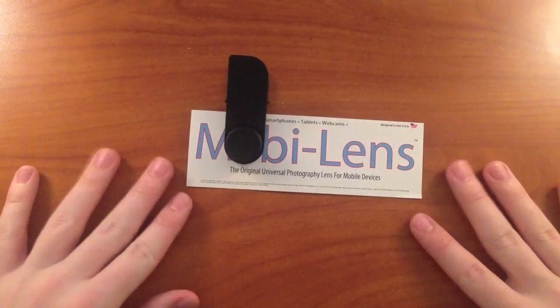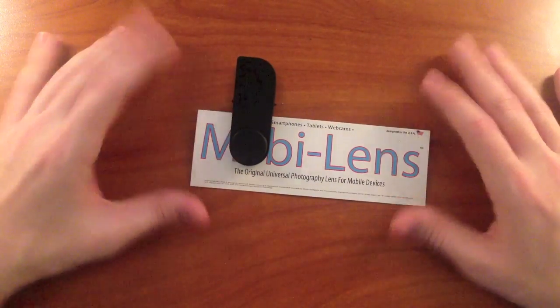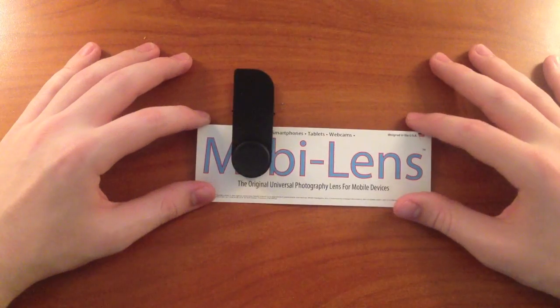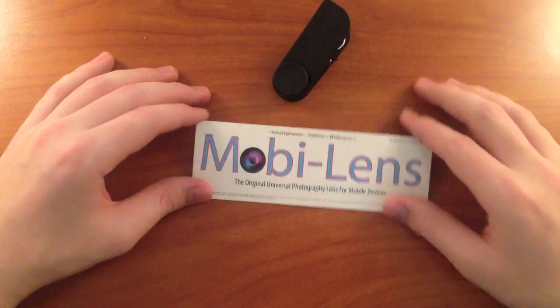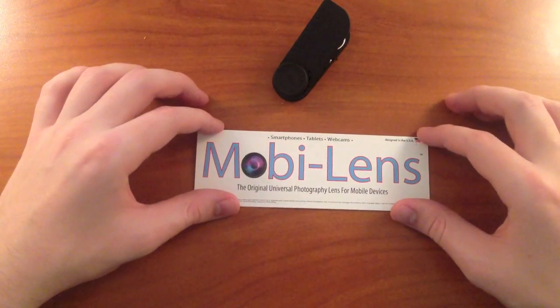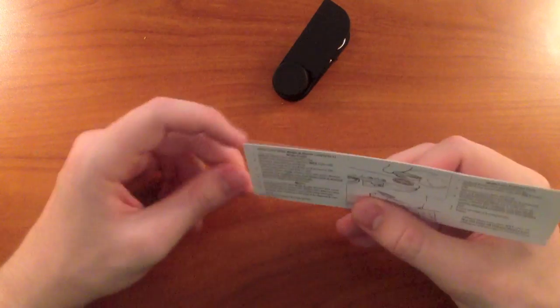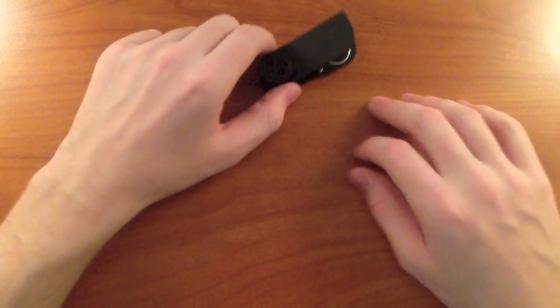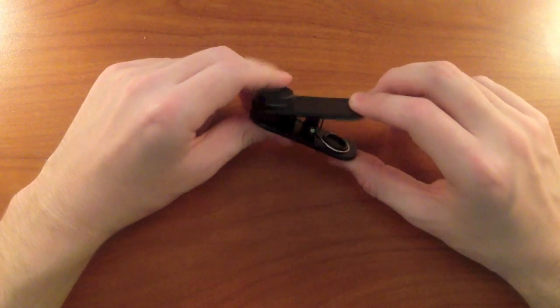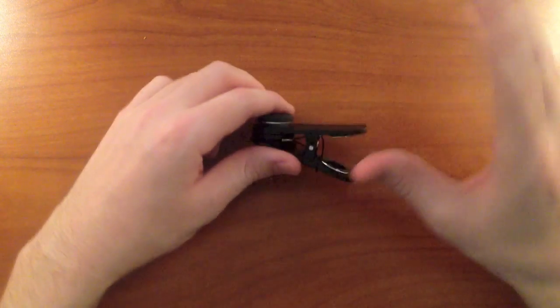Upon receiving the package, once you order one, you open it and this is what you get. This is a complete unboxing. You unclip the clip and you're left with this piece of paper. It has a logo, flip it around, you've got instructions, which I didn't read. It seemed pretty self-explanatory, which kind of caused some issues. We'll go over that in a second.